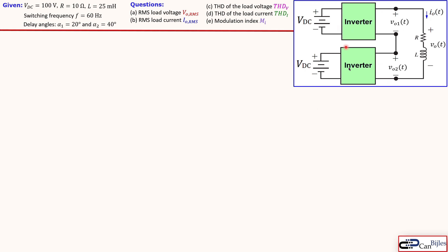This is our circuit in general. We see two DC voltage sources each 100 volts, and the series RL load. We have a switching frequency of 60 hertz and two delay angles: alpha1 = 20 degrees and alpha2 = 40 degrees. We would like to calculate the RMS load voltage, RMS load current, THD for the load voltage, THD for the load current, and the modulation index.